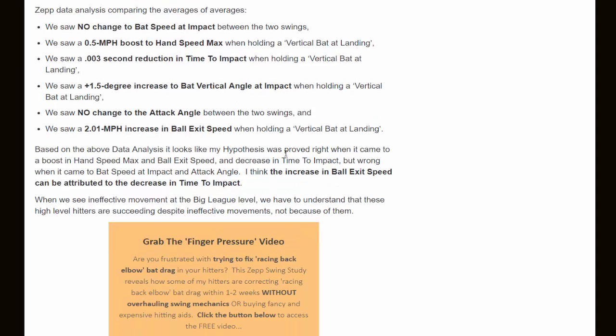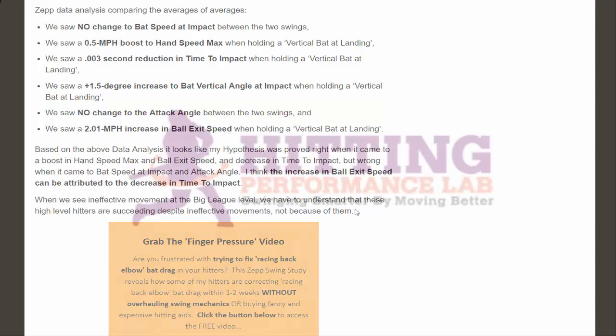Based on the data analysis, my hypothesis was proved right when it came to boosting hand speed max, ball exit speed, and decreasing time to impact, but was wrong when it came to bat speed at impact and attack angle. I think the increase in ball exit speed can be attributed to the decrease in time to impact. When we see ineffective movement at the big league level, we have to understand that high-level hitters are succeeding despite ineffective movements, not because of them. Swing smarter by moving better.